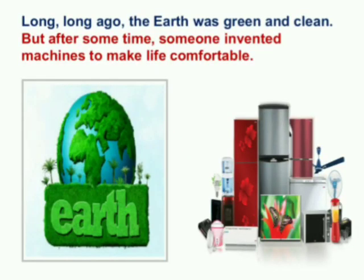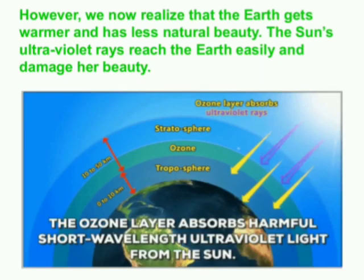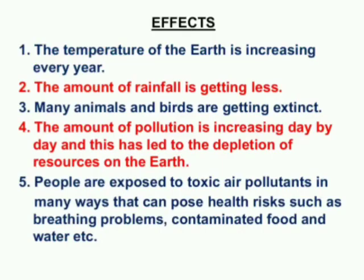Long, long ago, the earth was green and clean. But after some time, someone invented machines to make life comfortable. However, we now realize that earth is getting warmer because the sun's ultraviolet rays are reaching the earth easily and damaging the life on the earth. Now, let's see what are its effects.